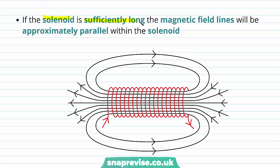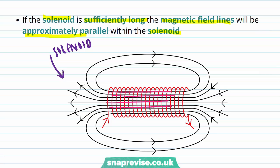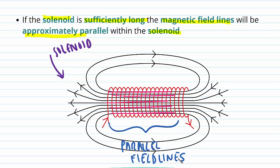If the solenoid is sufficiently long, the magnetic field lines will be approximately parallel within the solenoid. Parallel field lines indicate a uniform magnetic field.